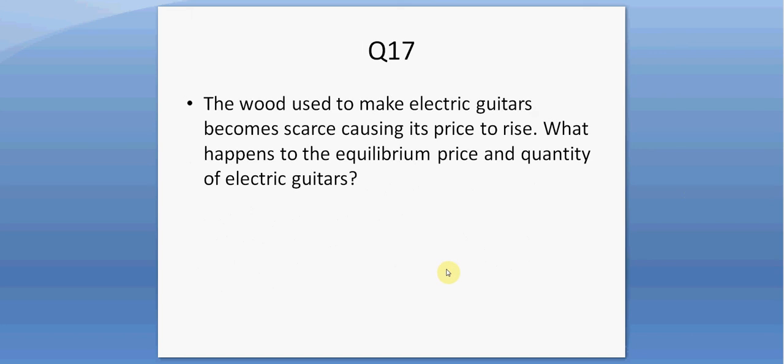Question seventeen. The wood used to make electric guitars becomes scarce, causing its price to rise. What happens to the equilibrium price and quantity of electric guitars? When the price of inputs goes up, supply decreases, causing the equilibrium price to rise and the equilibrium quantity to fall.